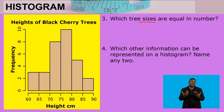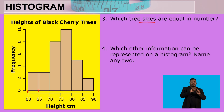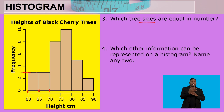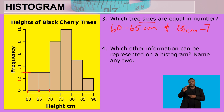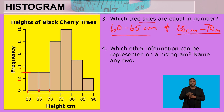Question three asks: which tree sizes are equal in number? We check the histogram for bars of equal height. The sizes 60 to 65 centimeters and 65 to 70 centimeters both have 3 trees each. So these are the two size groups that have an equal number of trees.